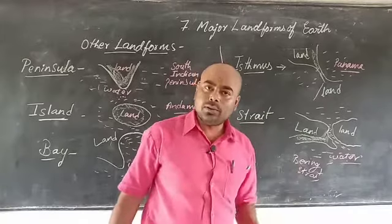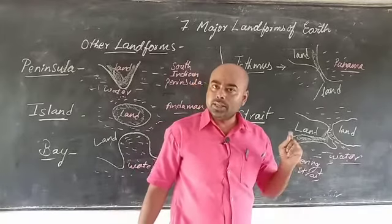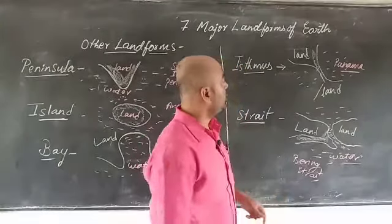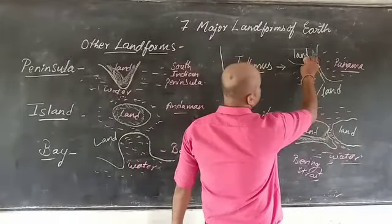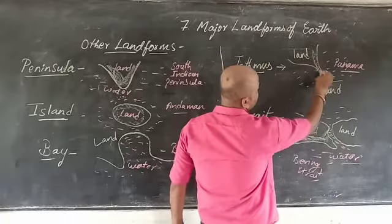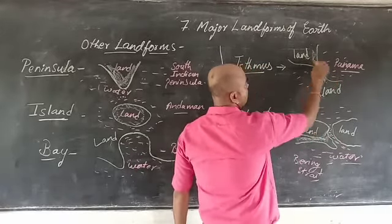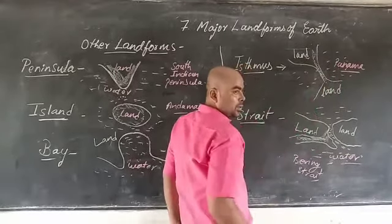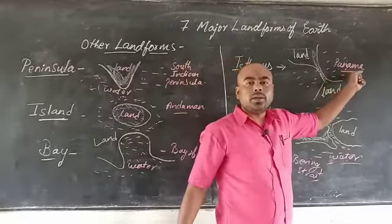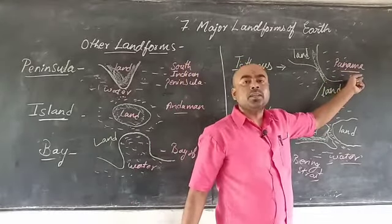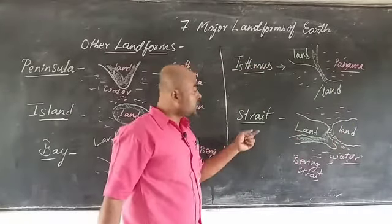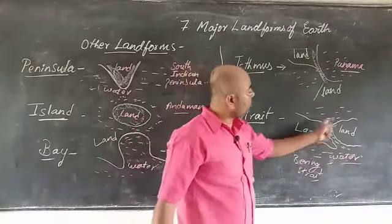Next is isthmus. Listen carefully — an isthmus is a narrow stretch of land joining two big land masses and separating two water bodies. For example, the Isthmus of Panama, which joins North and South America.